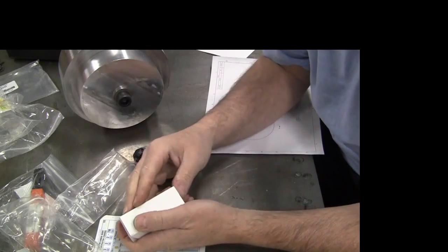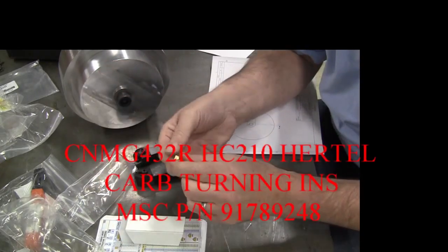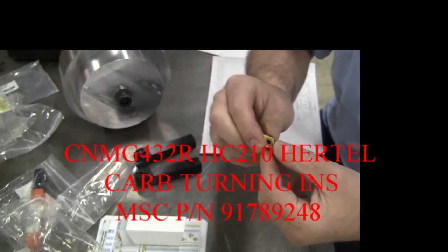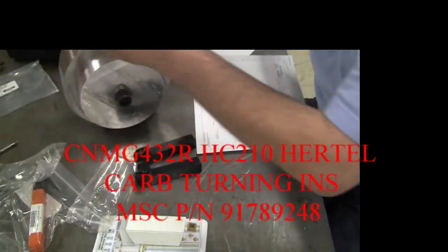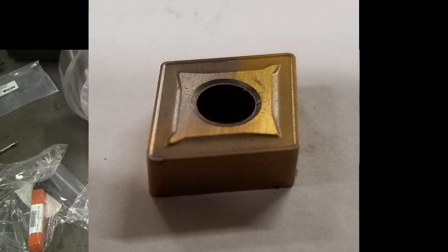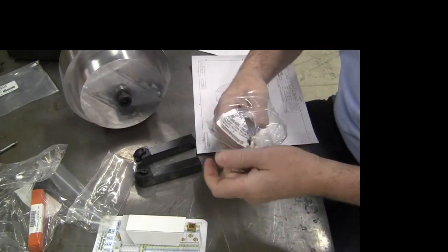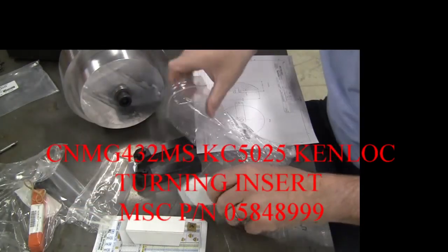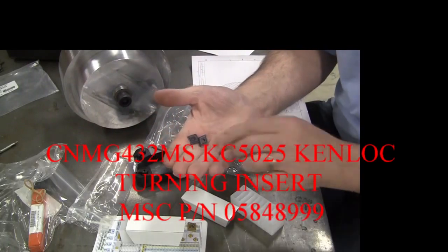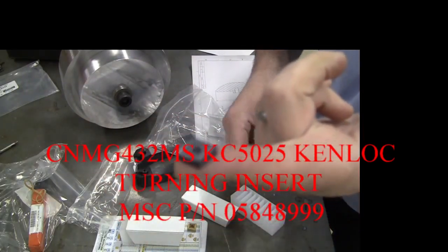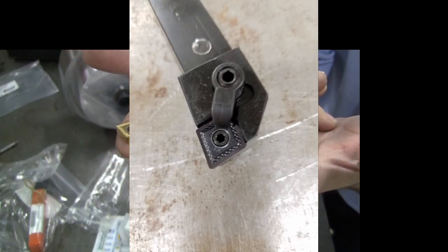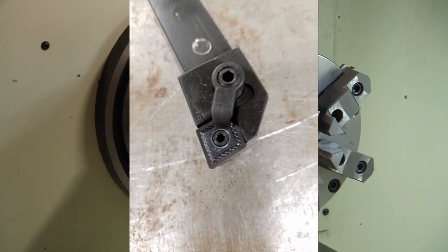The inserts I bought, I went two different ways. I bought the cheap ones just to see how they were going to perform, and that's what these are—these are Hertel. I'm not sure if this is MSC's brand, but here's the insert right there. It doesn't look like it's going to be an aggressive chip breaker, but that's what I want—I don't want the long stringy chips. Then the other type I bought was from Kenna metal. This one looked like it was going to be a better chip breaker. You can see the difference.